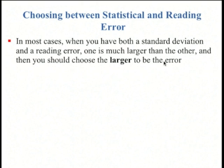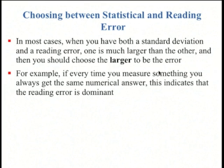Now what if we have both a statistical error, like a standard deviation, and a reading error? Well, usually one of these is much larger than the other. In that case, you just choose the larger one. For example, if every time you measure something, you always get the same numerical answer, like with that digital thermometer that's 12.8, you dip it back in, 12.8, 12.8, this indicates that your reading error is dominant. You're not getting any scatter.